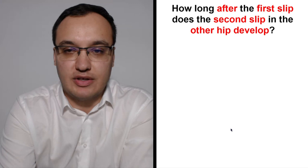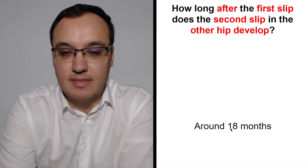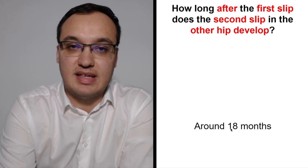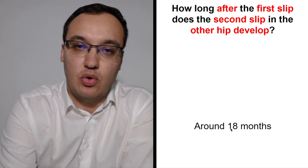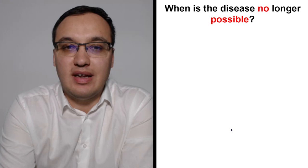How long after the first slip does the second slip in the other hip develop? It takes 18 months. Many patients will have a slip in both hips, so if you get this diagnosis, you can expect the disease to appear in the other hip in about one and a half years.